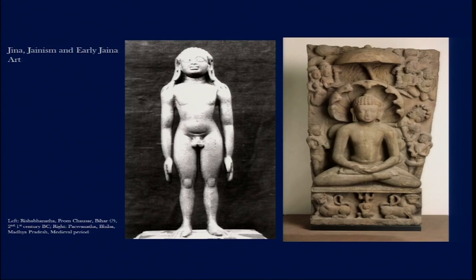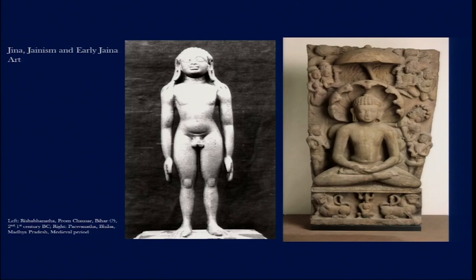Another image on the right side of the screen comes from the 9th to 10th century AD. This image looks very similar to how Buddha's image is made — seated in the Padmasana position in a meditative gesture. There are also signs that could be confused with Buddha's iconography, such as the coiled hair and the bun on top of the head. These marks can be confused with Buddha.